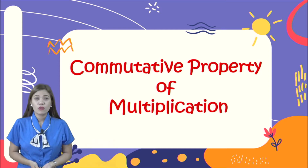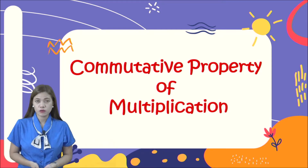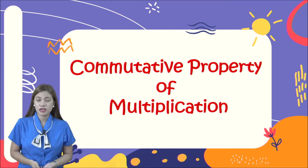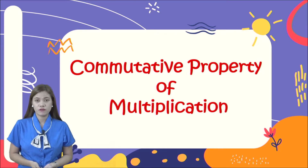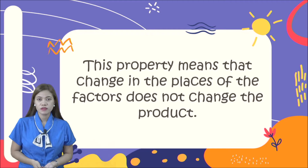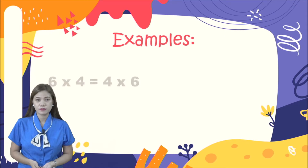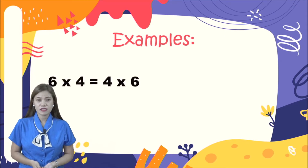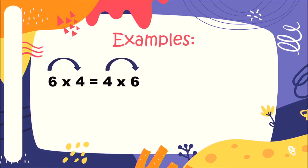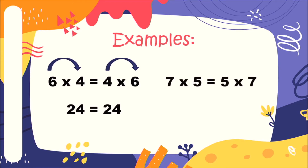This is one of the properties of multiplication. First, we need to learn what is the commutative property of multiplication. This property means that changing the places of the factors does not change the product. Let us look at the examples. If we have six times four and we interchange the two factors into four times six, their products will both be the same: 24 is equal to 24.